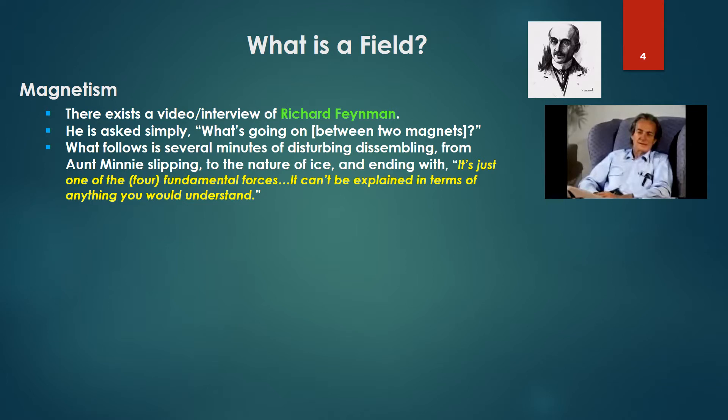Begin with magnetism. There's a video interview with Richard Feynman, the well-known quantum theorist. He is asked simply what's going on between two magnets — implying what's going on in terms of attraction and repulsion. What follows is several minutes of disturbing dissembling, from aren't many slipping on the ice, to the nature of ice, to the difficulty of describing the slipperiness of ice, and ending with: 'It's just one of the four fundamental forces. It can't be explained in terms of anything you would understand.'